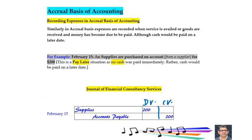Similarly, in accrual basis of accounting, recording of expenses is done when expenses have been incurred — that is, when services have been availed or goods are received and money has become due to be paid, although cash would be paid on a later date. For example, on 15th February office supplies are purchased on account from a supplier for $200.